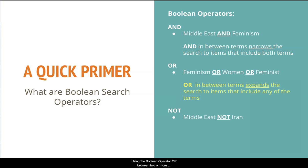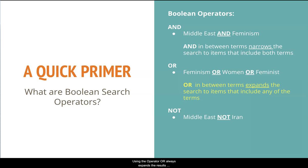Using the Boolean operator OR between two or more terms will tell the database to return items in the results that have any of those terms. This is great for searches where there are many different types of terms that could be used to retrieve information on a topic. Using the operator OR always expands the results since it provides more options for keywords that may be used to retrieve the results.